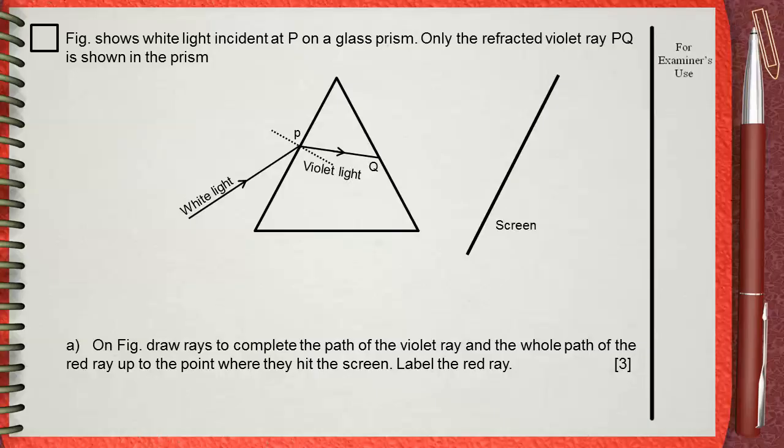On figure, draw rays to complete the path of the violet ray and the whole path of the red ray up to the point where they hit the screen. Label this the red ray.